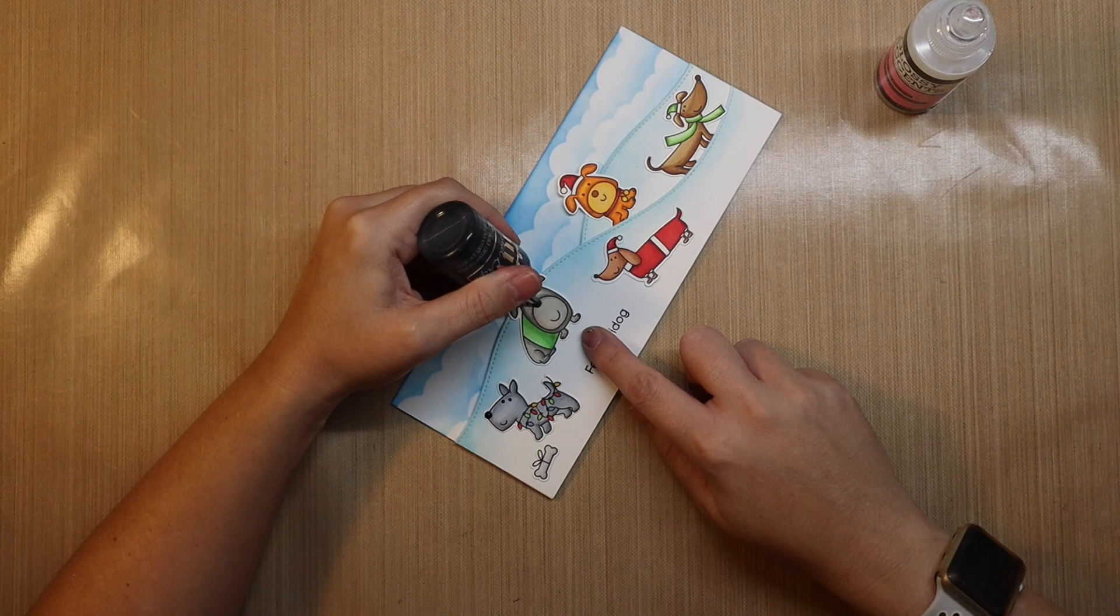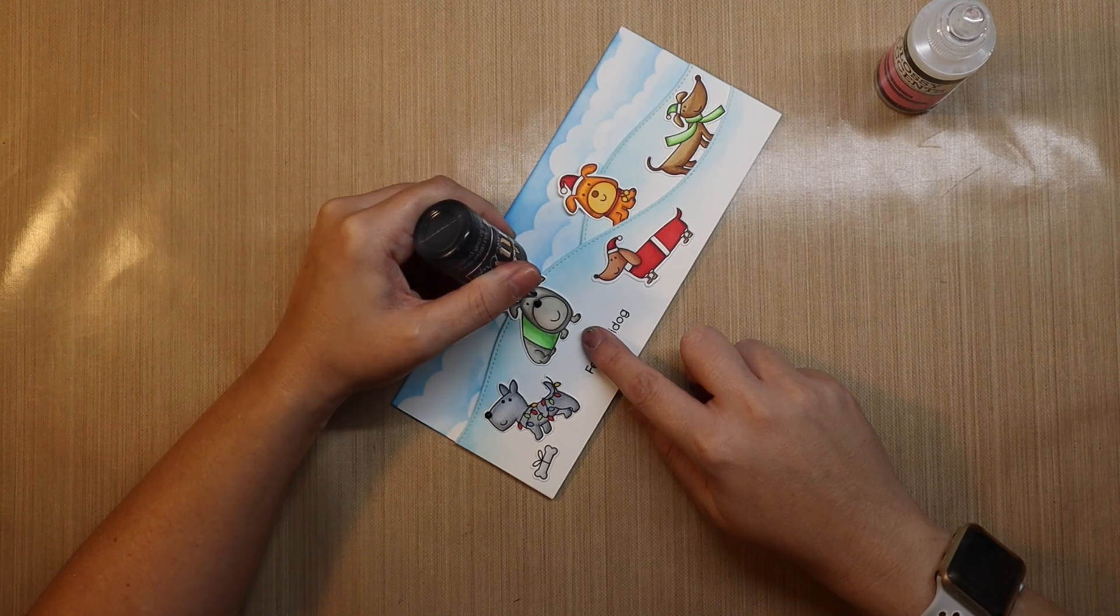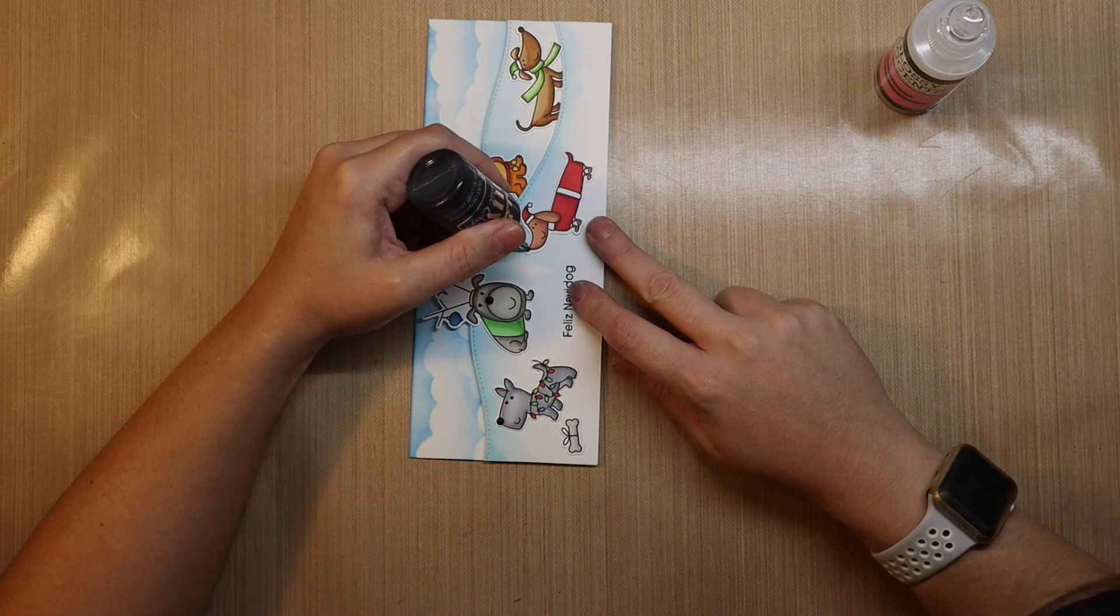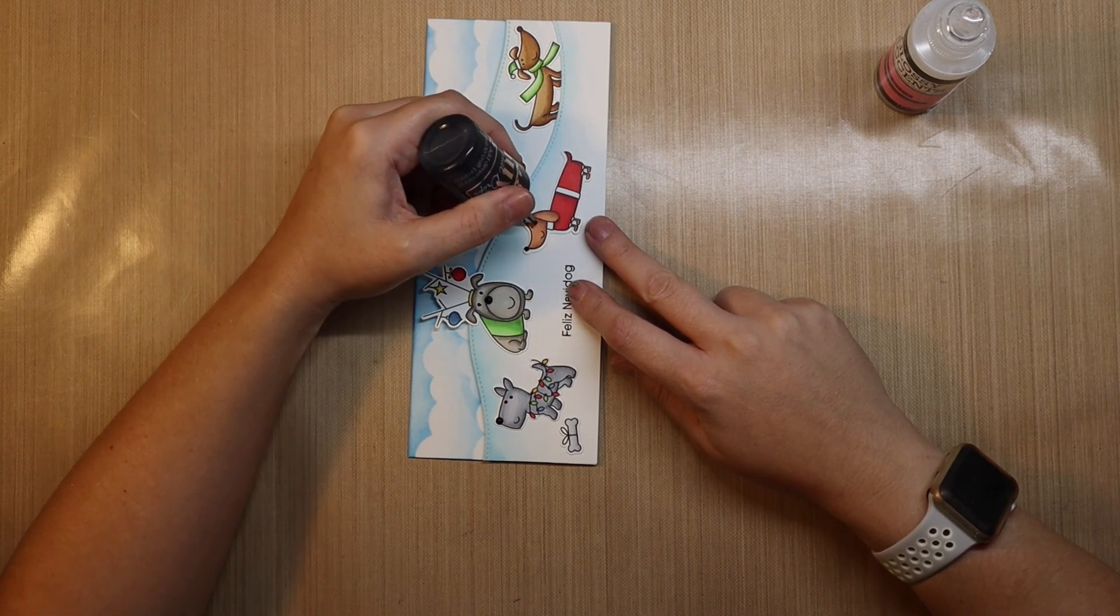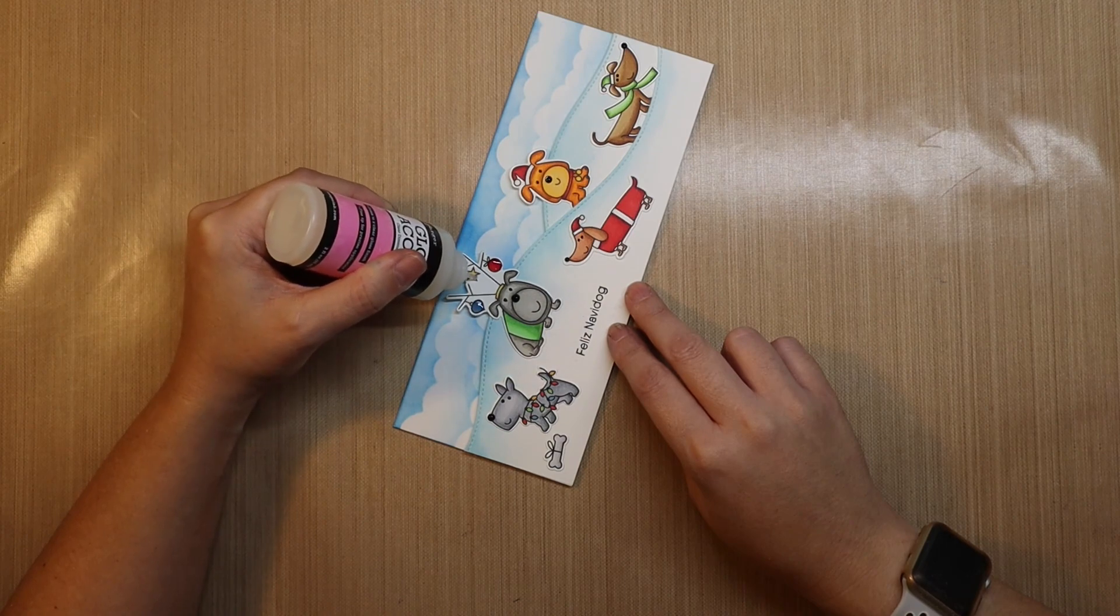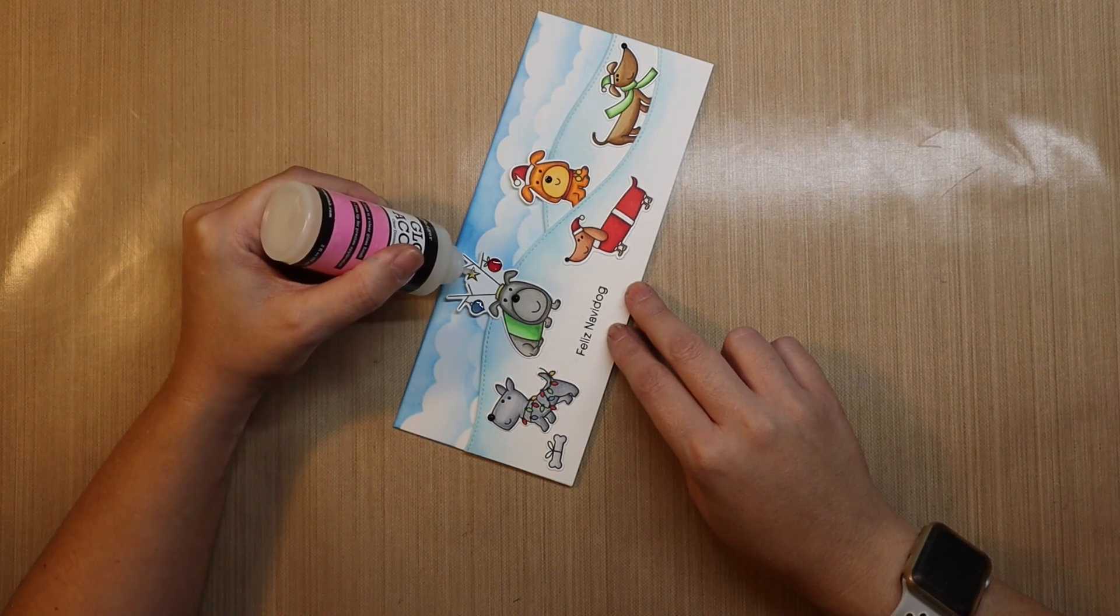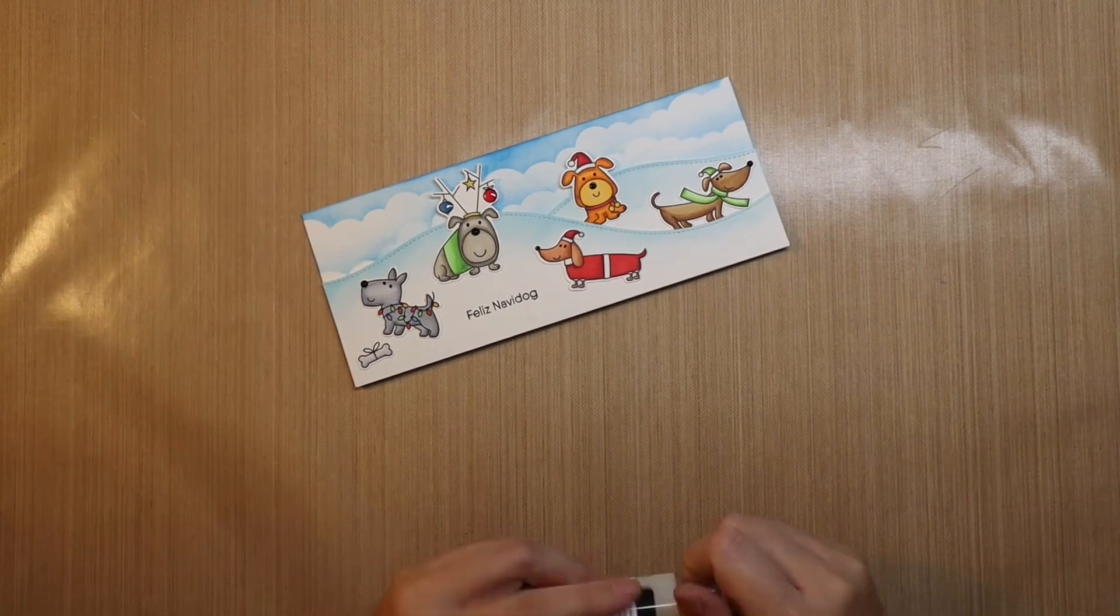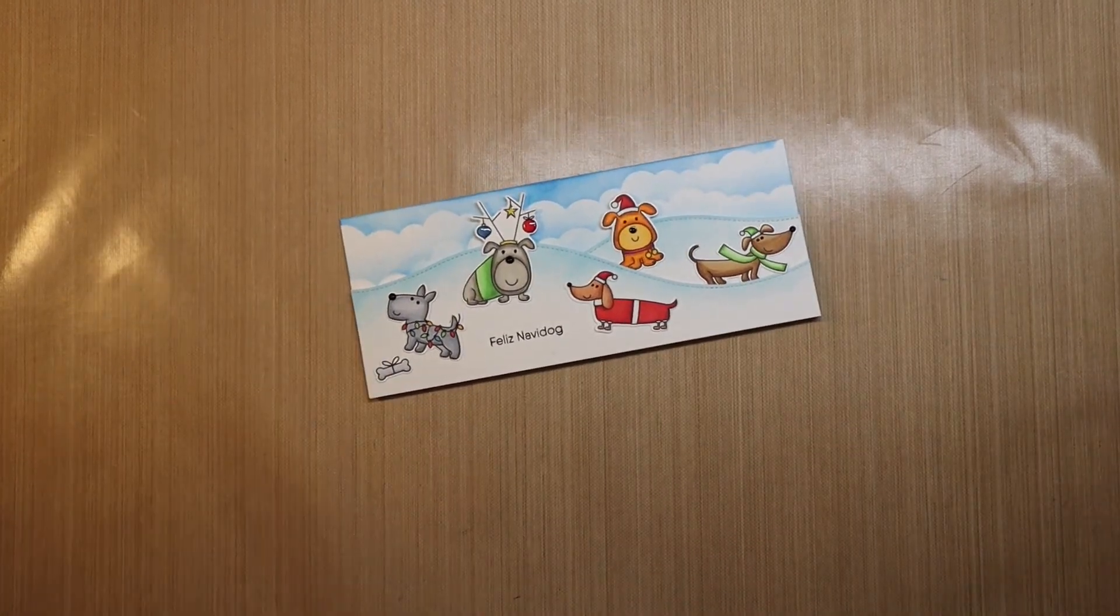And then I'm using Ranger Glossy Accents on the ornaments hanging from that headpiece on the dog with the green shirt. These are little light touches, but it just adds a little bit, just helps complete the card, keeps it from being too flat.